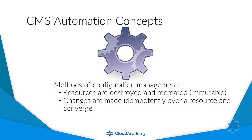It is important to understand the means by which different CMS automation technologies operate. There are two different methods by which a system under configuration management control is modified: either the infrastructure is immutable and a change will result in a destruction and recreation of a resource, or the infrastructure change will run idempotently over a resource and converge as necessary. These concepts are very important when evaluating and understanding how a CMS solution works.